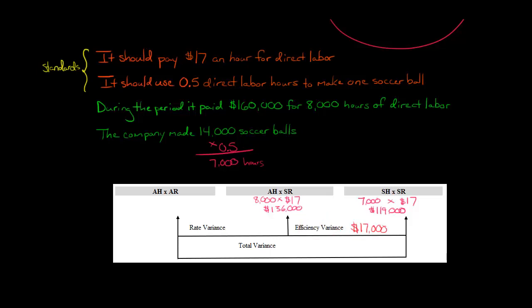It's $17,000. Now the question is, is it favorable or is it unfavorable? Well, to figure that out, we've got to think through this. The standard rate is the same in each case. So really what is different is the actual hours were 8,000 and the standard hours were 7,000. What does that practically mean?